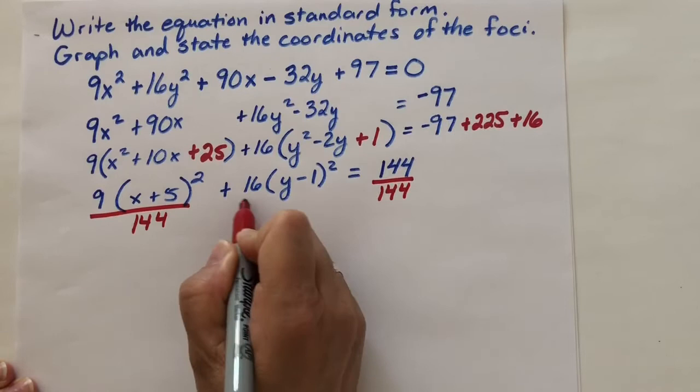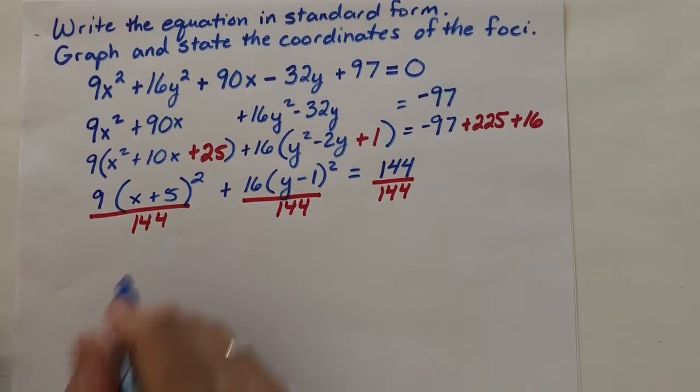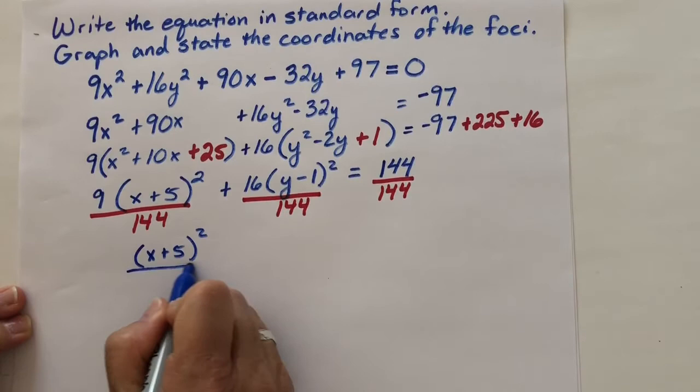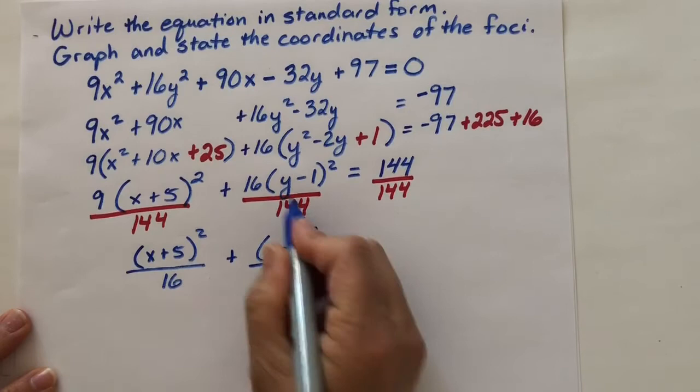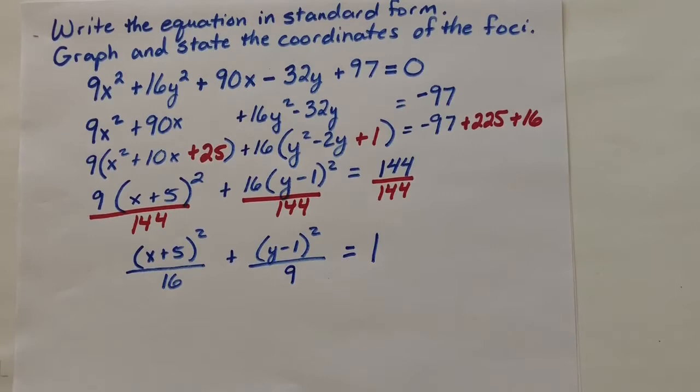And when we do that, we have (x+5)²/16. 9 goes into 144 16 times. And similarly here, 16 goes into 144 9 times. And we have our equation in standard form.